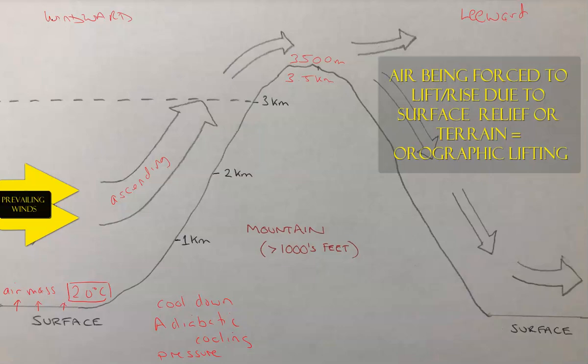The air contains water vapor — H₂O in gas form — giving us a relative humidity that is below 100% because it's not yet at the dew point. This air has water vapor at maybe 20, 30, or 40% relative humidity, but as it rises, that humidity is going to change and increase.